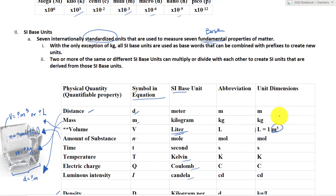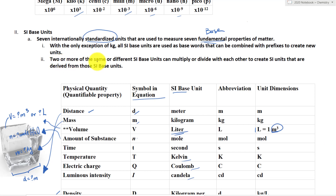Because these are SI base units, the abbreviation is the same as the dimension — except for liter, since one liter equals meter cubed. SI base units are fundamental units agreed upon by countries worldwide. What is special is that we can combine two or more of the same or different SI base units by multiplying or dividing to create derived SI units.